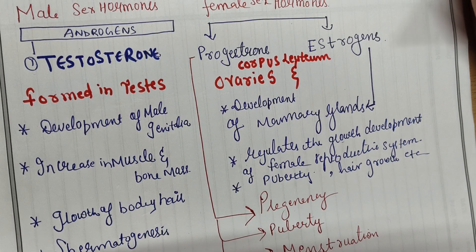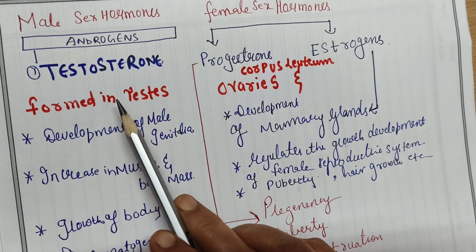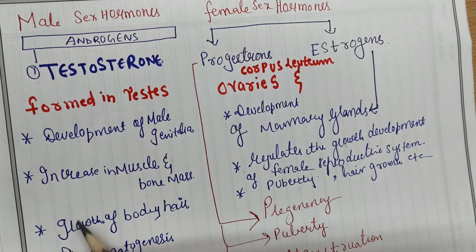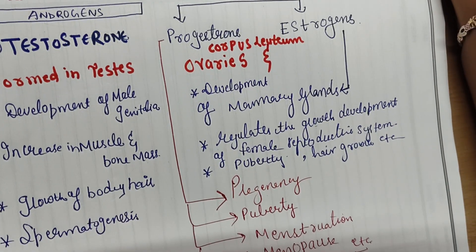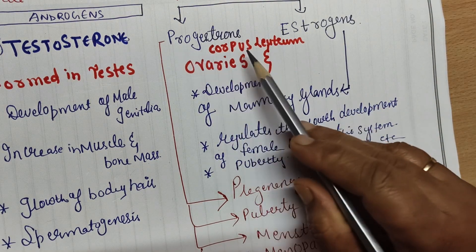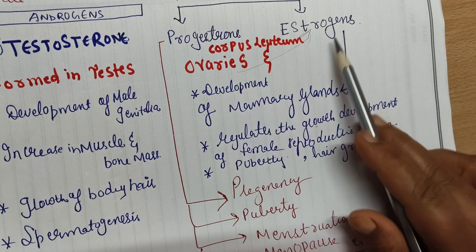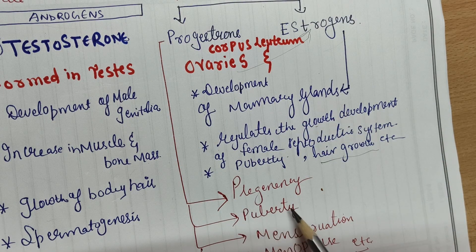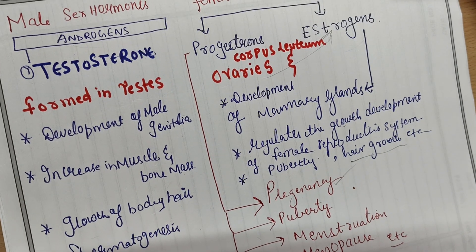Testosterone is the main male hormone, produced in the testes. It helps in the development of male genitalia, increases muscle and bone mass, promotes body hair growth, and helps in spermatogenesis. Female sex hormones — mainly progesterone and estrogen — are secreted in the corpus luteum and ovaries. Estrogens help in the development of the female reproductive system, mammary glands, and puberty-related changes. Progesterone helps during pregnancy, menstruation, menopause, and other female reproductive functions.